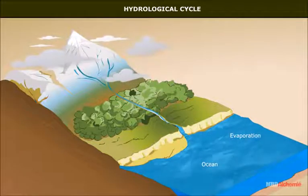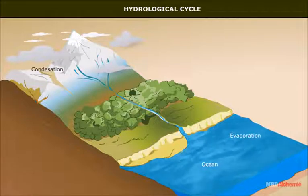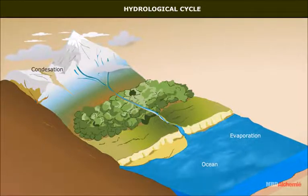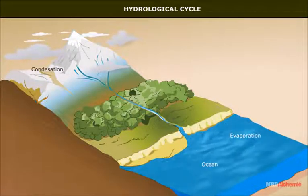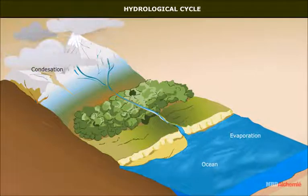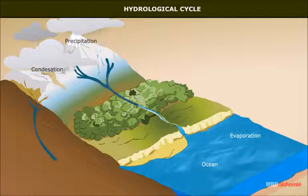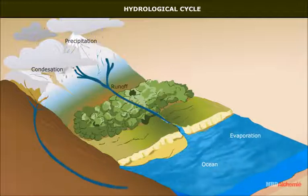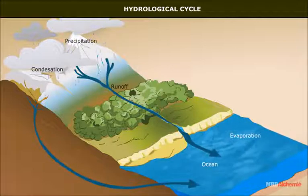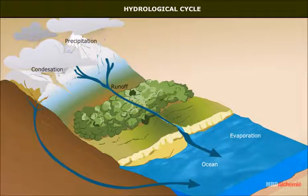When water vapor rises in the atmosphere, condensation begins — vapor is changed into water droplets or ice crystals. These tiny water droplets and ice crystals rise further up into the atmosphere, where they form clouds. When the air is unable to hold them, they fall to the earth as precipitation.